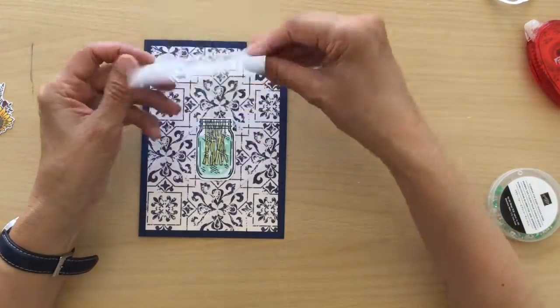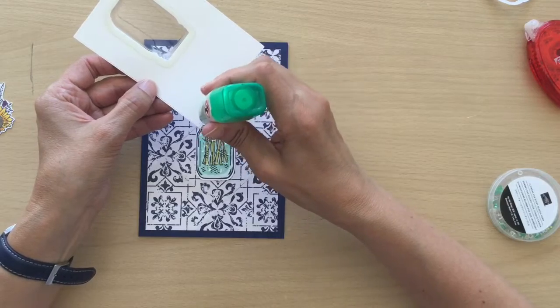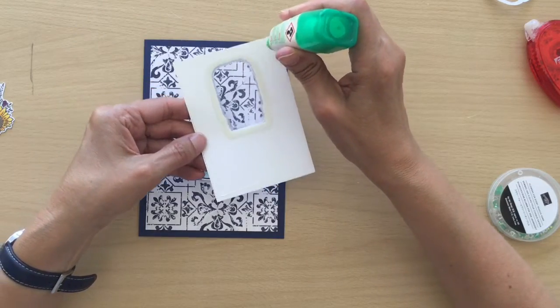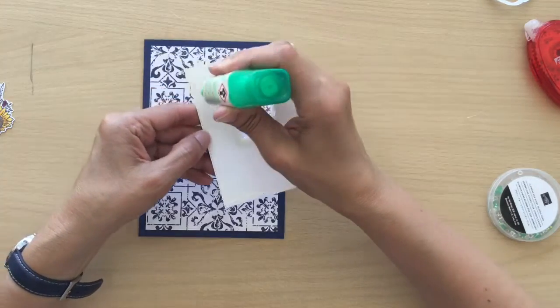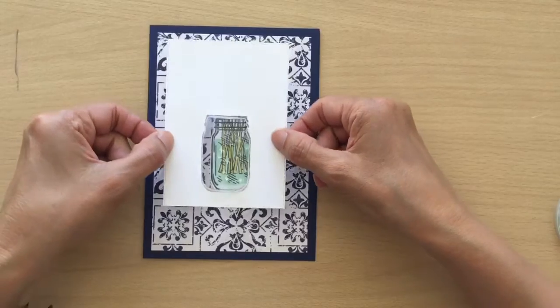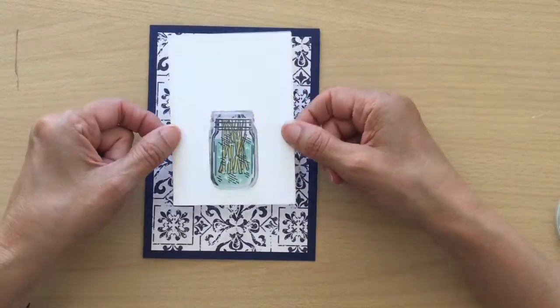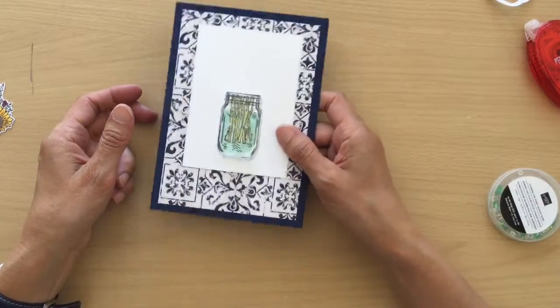Next we're going to take the release paper off of the back of the card—this is the wrong side, this is the right side. I'm just going to put a tiny bit of glue in some of these corners, and then we're going to pop this down over our mason jar. And then we've got our shaker.